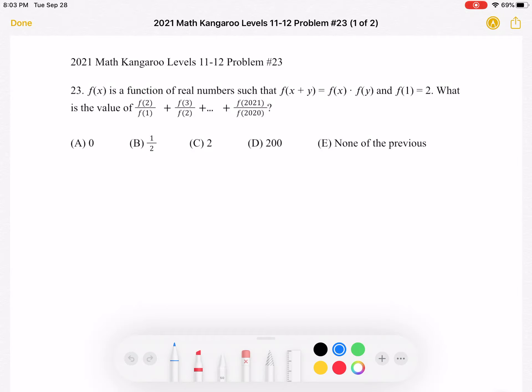The answer choices are: (A) 0, (B) 1/2, (C) 2, (D) 200, or (E) none of the previous answers.